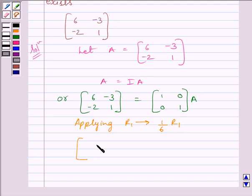we get matrix 1, minus 1 upon 2, minus 2, 1 equals matrix 1 upon 6, 0, 0, 1 multiplied by A.